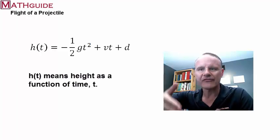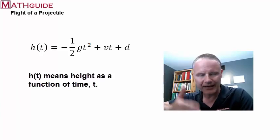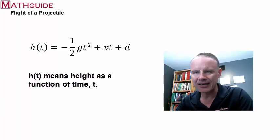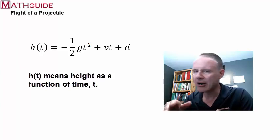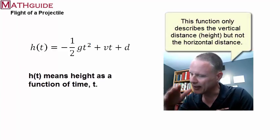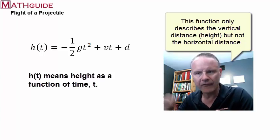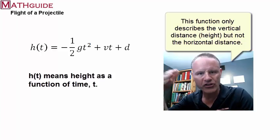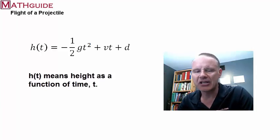So h stands, of course, for the vertical distance, which we call height. So we could figure out what the height is of a projectile over time. We don't care about what the horizontal distance is of this projectile. This equation is only going to tell us what is the height of a projectile as it courses through time. So t is time, h is height.